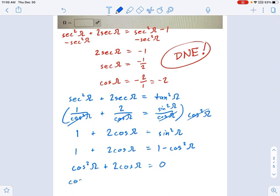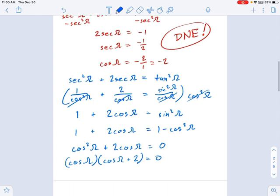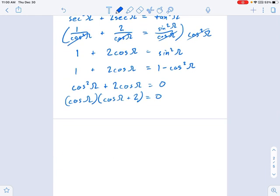So this becomes cosine of omega. That's my GCF. And cosine omega plus two equals zero. So we get two possibilities here. One is that cosine omega equals negative two. Well, that does not work. That's extraneous. Because you cannot have a cosine value greater than one or less than negative one. We've already talked about that.